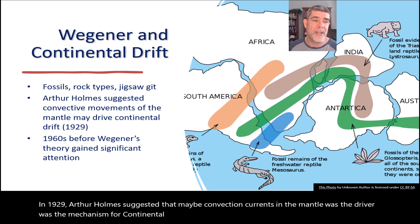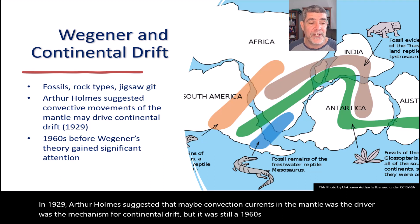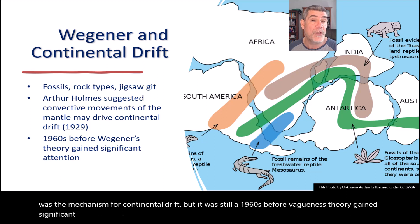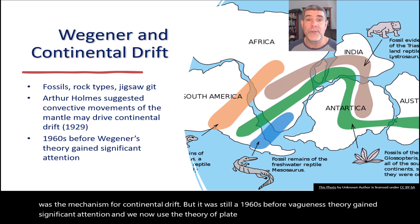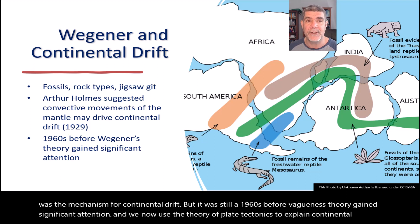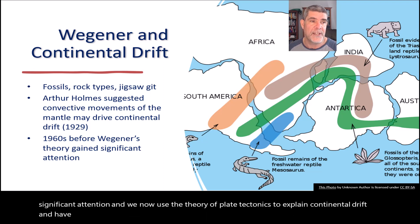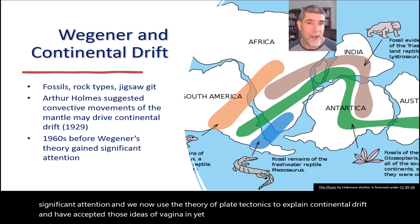But it was still the 1960s before Wegener's theory gained significant attention, and we now use the theory of plate tectonics to explain continental drift and have accepted those ideas of Wegener in yet another significant paradigm shift.